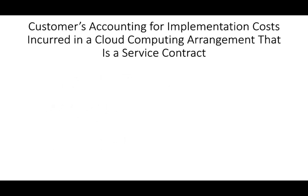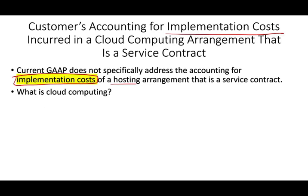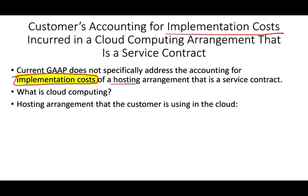The fourth topic is customer accounting for the implementation costs incurred in cloud computing arrangements — that's a service contract. The previous GAAP did not specifically address the accounting for implementation costs for cloud computing. In cloud computing, you have either a software or a service. For example, if you use Google to store your documents, that's a service. But companies sometimes use a software on the cloud.